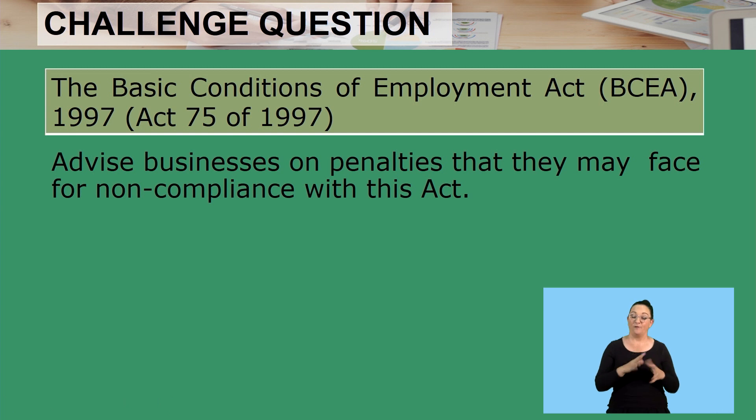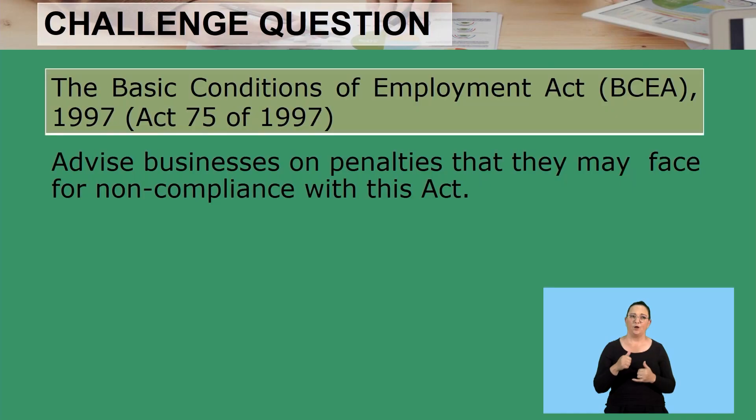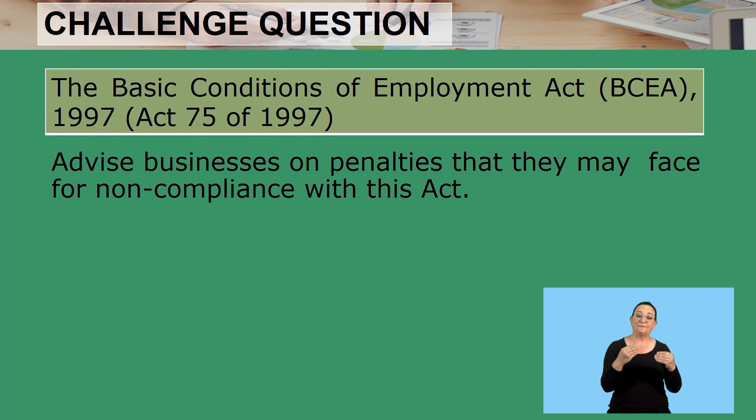To show that you understood everything discussed throughout this lesson, I'm going to leave you with a challenging question. As soon as I finish here, you're going to sit down and complete this to test your knowledge. This challenging question is all about the BCA — the Basic Conditions of Employment Act. It says: advise businesses on penalties that they may face for non-compliance with this act. So if they don't comply, there are obviously penalties, and you need to advise businesses on what those penalties are.